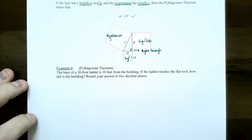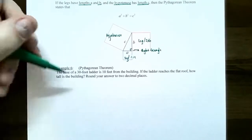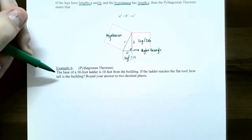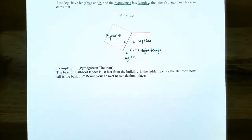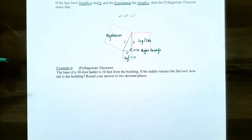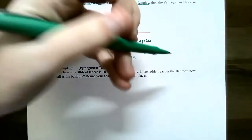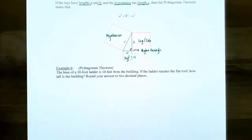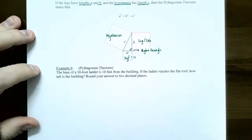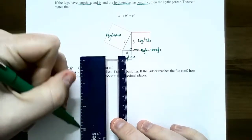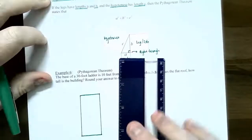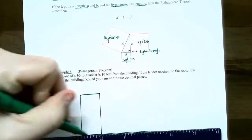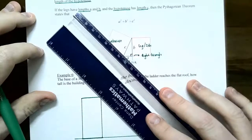Let's try Example 6 — Pythagorean Theorem. The base of a 30-foot ladder is 10 feet from the building. The ladder reaches the flat roof. How tall is the building? Round your answer to two decimal places. There's a five-step process when you solve word problems. Always identify what you're being asked to find first — we need to find how tall the building is. It helps to draw a figure. You have a building with a flat roof, and the ladder is leaning up against it from ground level, reaching the top.